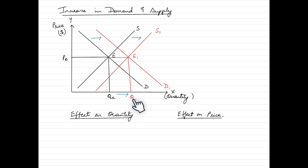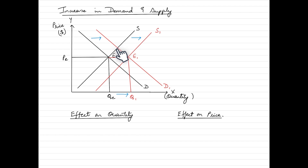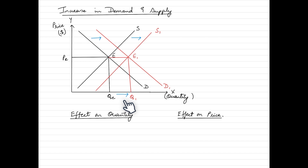If we compare just the increase in demand, an increase in demand leads to an increase in quantity and an increase in price. On the other hand, an increase in supply leads to an increase in quantity but a reduction in the equilibrium price. Overall, we can conclude that quantity would definitely rise, however we are not really sure about the change in price.